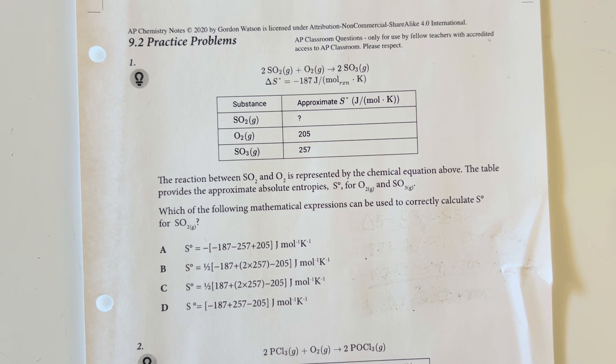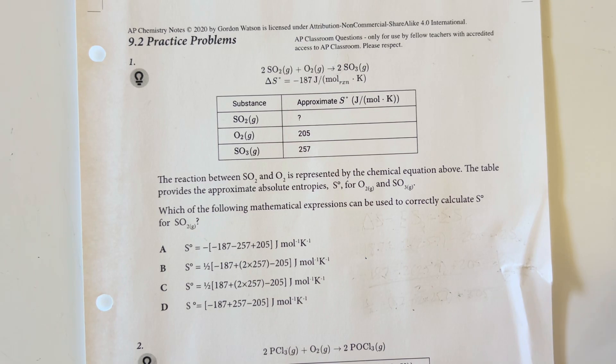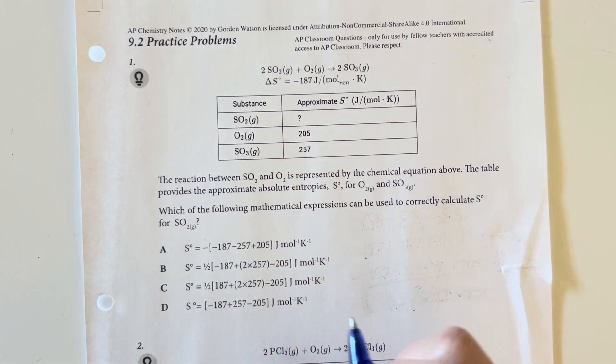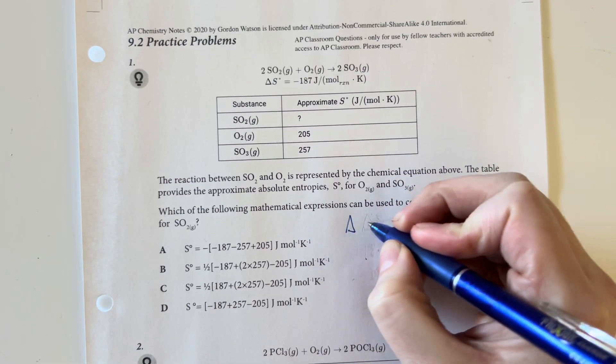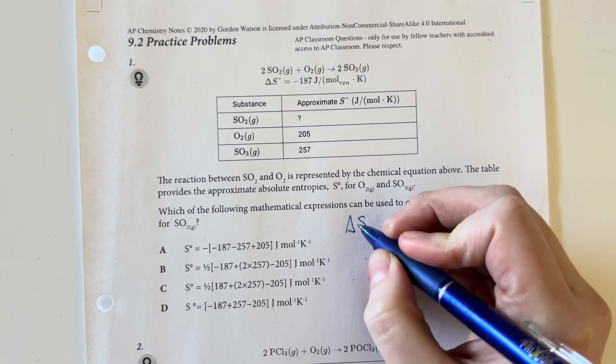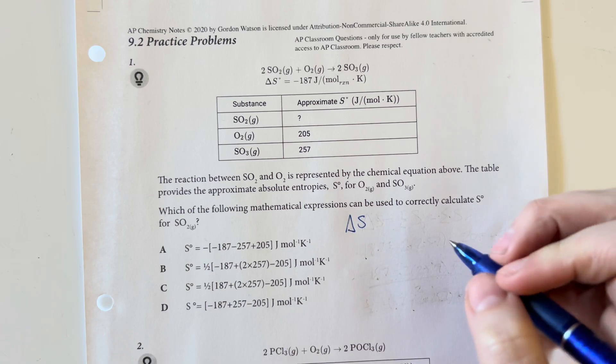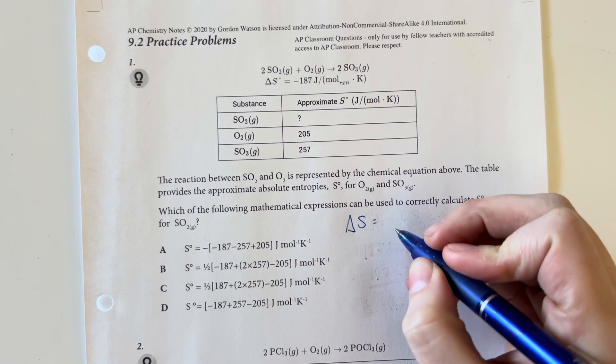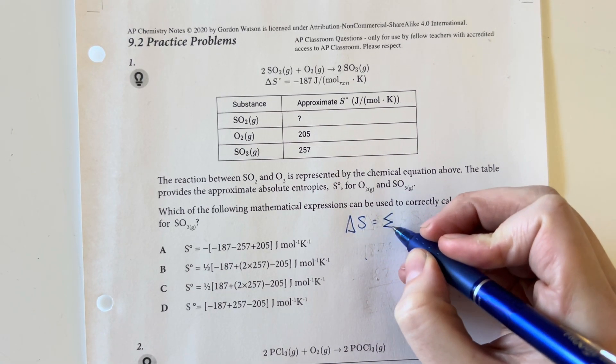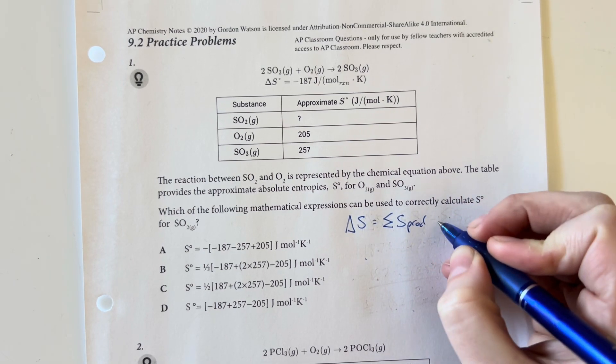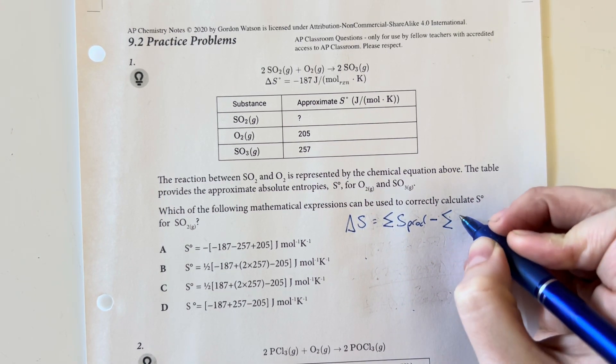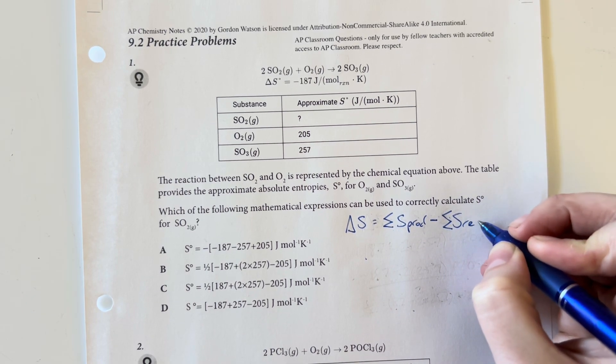Which of the following mathematical expressions can be used to correctly calculate the absolute entropy for sulfur dioxide? We're going to be using the equation that delta S is equal to the sum of the entropies for our products minus the sum of our entropies for our reactants.